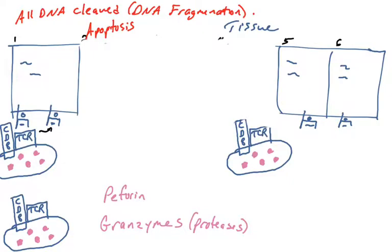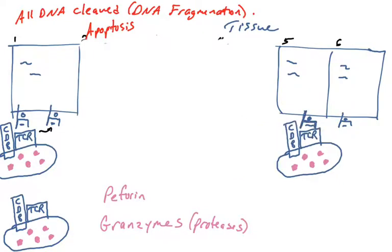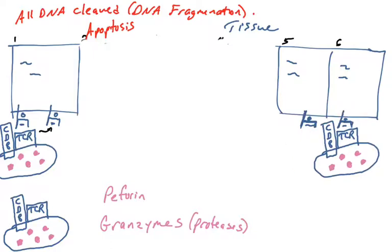Cell 5, it's presenting a self-peptide. That peptide is not recognized by that T cell receptor, so that cytotoxic T cell moves to the next one. That peptide is presenting a self-peptide, doesn't recognize that T cell receptor, and then keeps moving on.